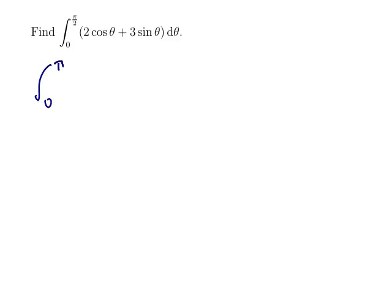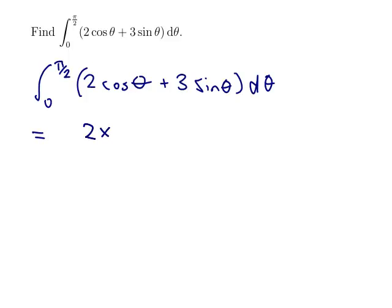So, 0 to pi on 2 of 2 cos theta plus 3 sin theta d theta is, 2's just multiplied on, so it'll stay there, cos. The derivative of cos is minus sin, so the integral of cos will be plus sin.